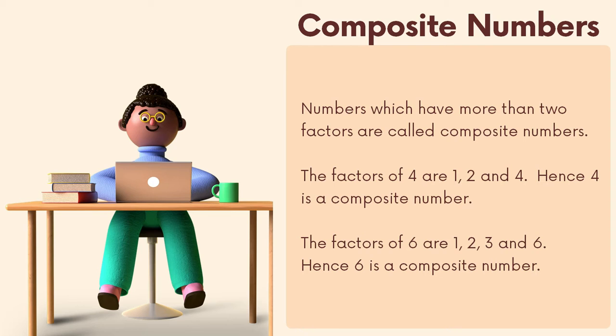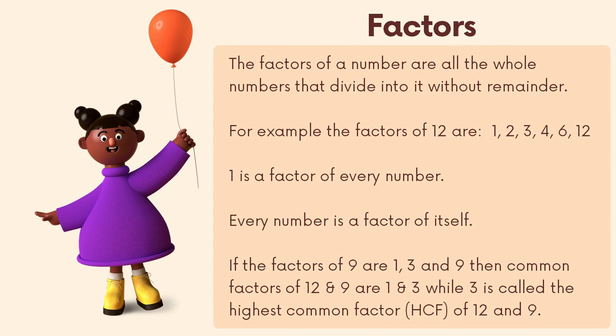Composite numbers: numbers which have more than two factors are called composite numbers. The factors of four are one, two, and four — hence four is a composite number. The factors of six are one, two, three, and six — hence six is a composite number.